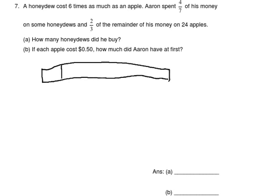One, two, three, four, five, six, seven. Four-sevenths is spent on honeydew. The remaining three parts is the remainder. He spent two-thirds of the remainder on apples — so two out of the three remaining parts is spent on apples, which equals 24 apples. One box can therefore buy 12 apples.